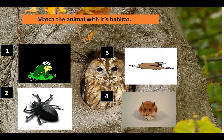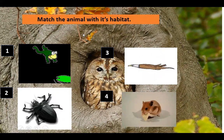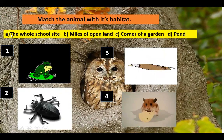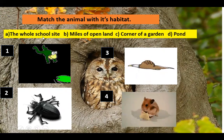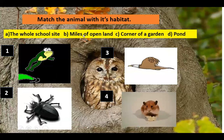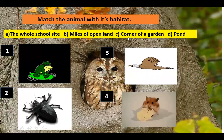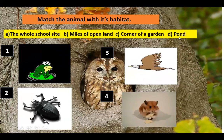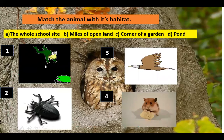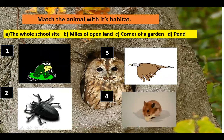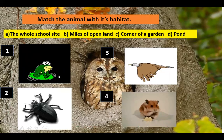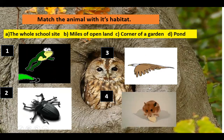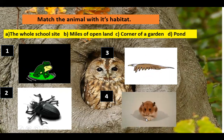Match the animal with its habitat. These are your options: Option A — the woodland side. Option B — miles of open land. Option C — corner of a garden. Option D — pond. First picture: a frog. Second one: a beetle. Third one: an eagle. Last one: a mouse.